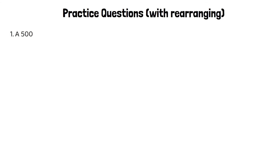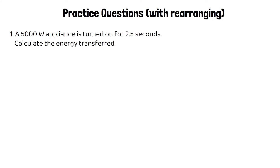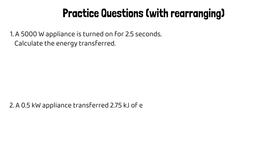Here are a couple of practice questions where you have to rearrange after substituting your values into the equation. A 5,000 watt appliance is turned on for 2.5 seconds — calculate the energy transferred. And a 0.5 kilowatt appliance transfers 2.75 kilojoules of energy — calculate the time taken. Make sure you check your units. Pause the video and give these questions a go.